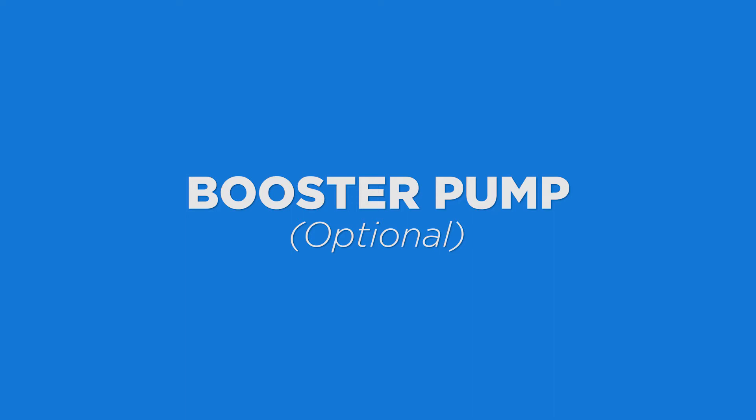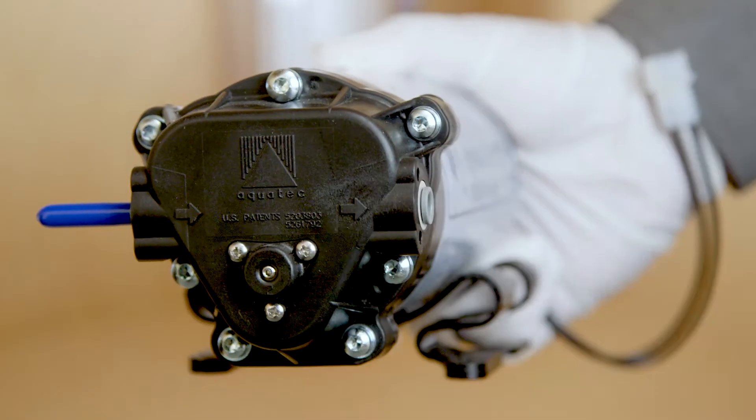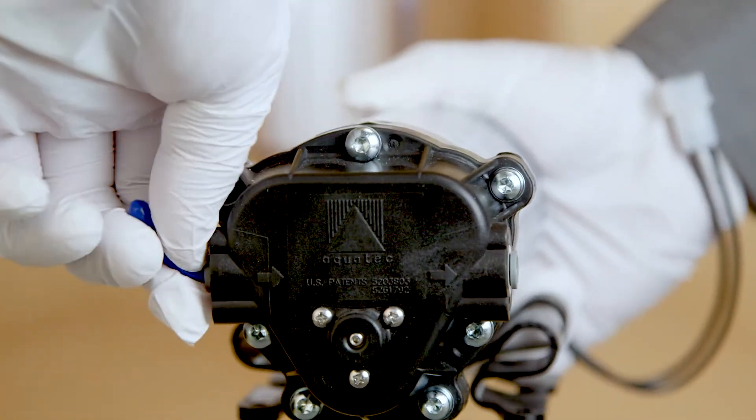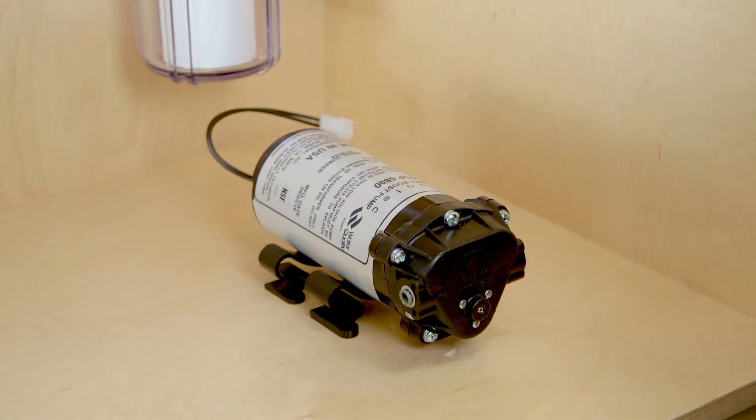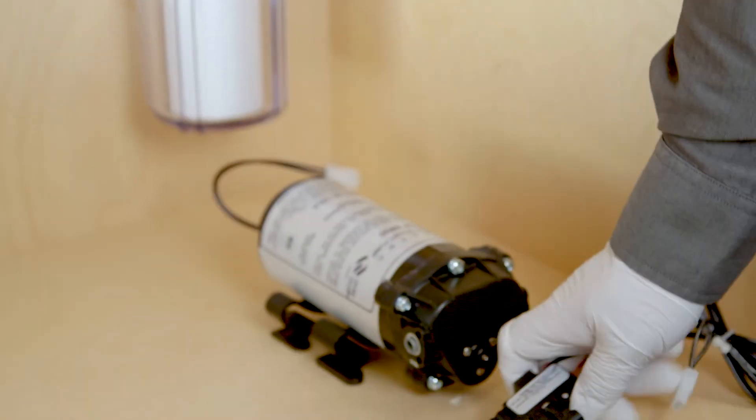Booster pump. This is optional. If a booster pump is included, start by removing the rubber plugs from the in and out ports. Place or mount the booster pump on the wall with the included hardware. Set the pressure switch aside as you'll need it later.